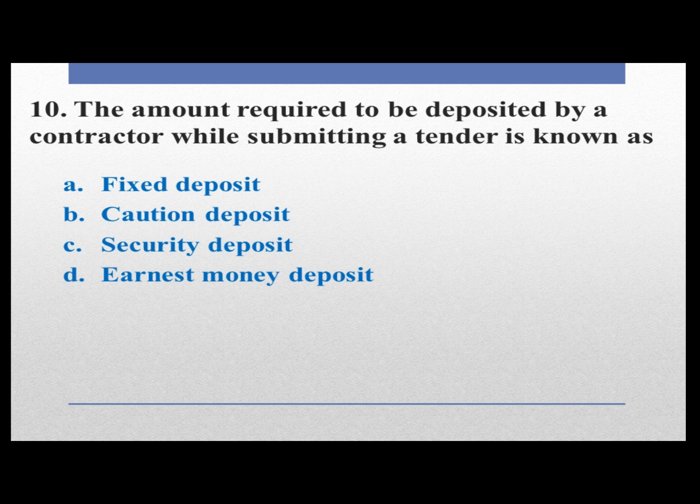The amount required to be deposited by a contractor while submitting a tender is known as: option A fixed deposit, option B caution deposit, option C security deposit, option D earnest money deposit. The answer is earnest money deposit. Option D is correct.